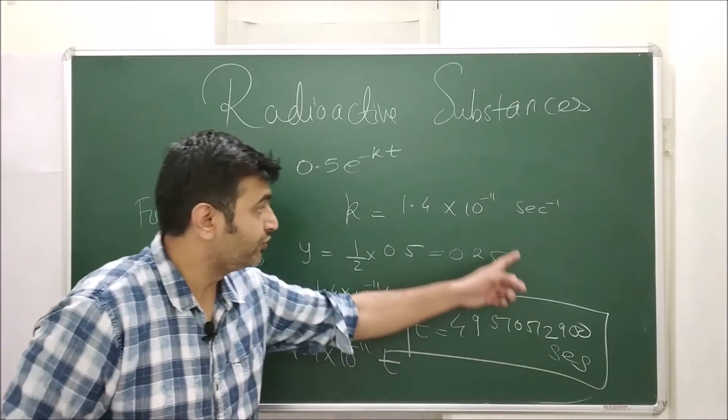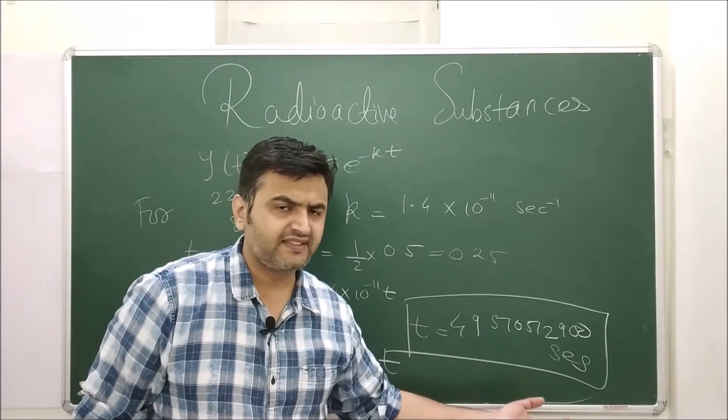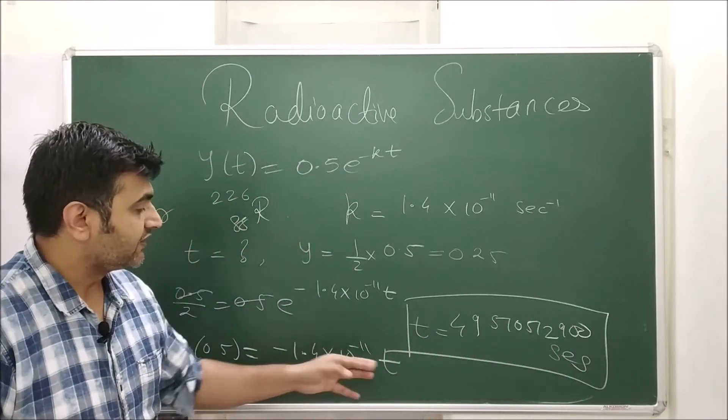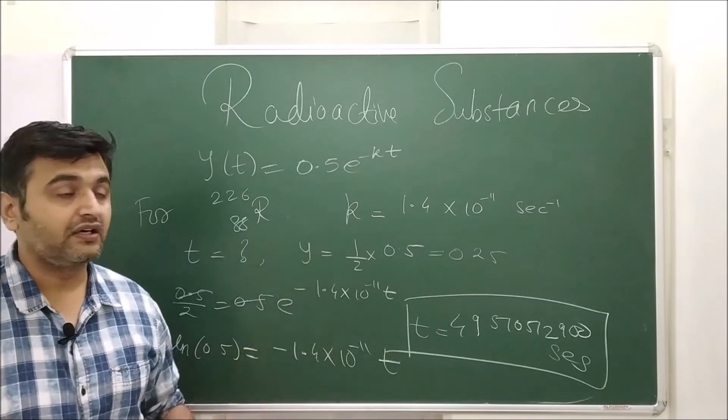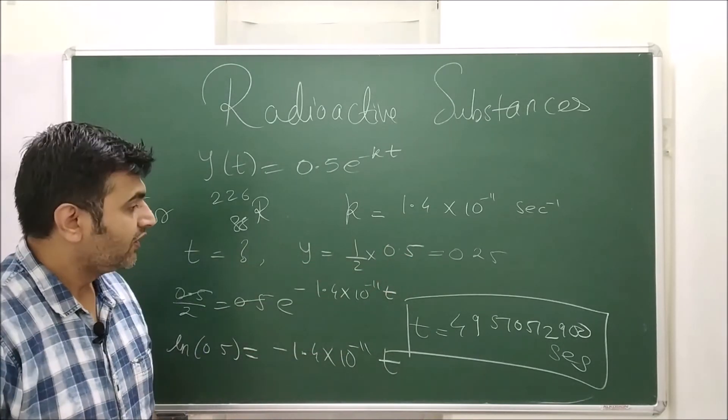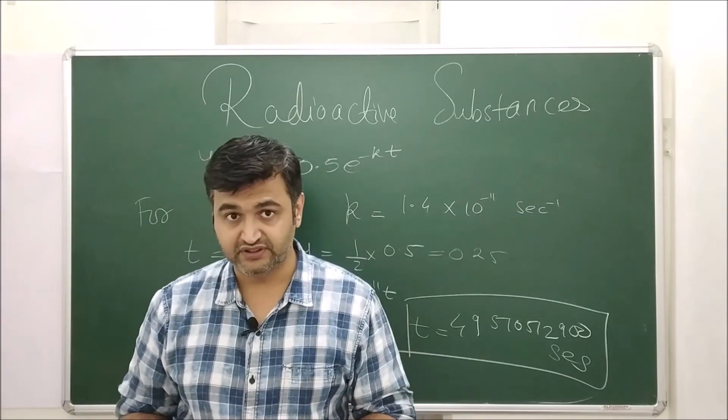So this much time it will take to reduce this substance to 0.25 seconds. This many seconds because the unit is second inverse. If you want, you can convert it to minutes or number of days. So this much time to reduce half of the given quantity. That's how one can play with radioactive substances and differential equations.